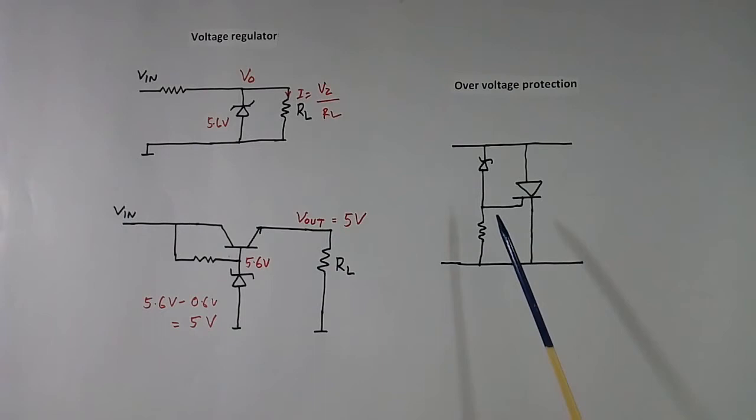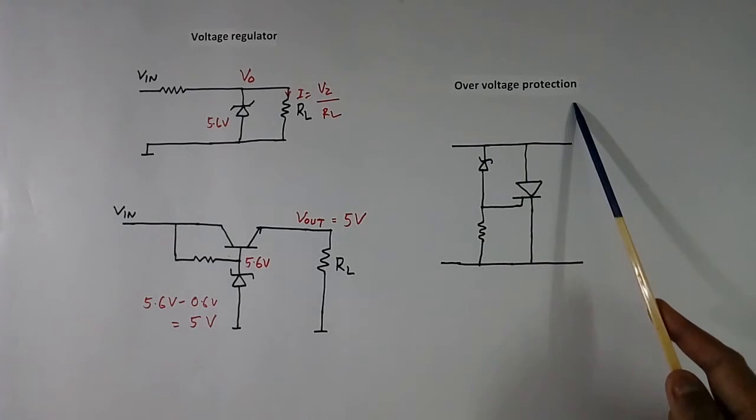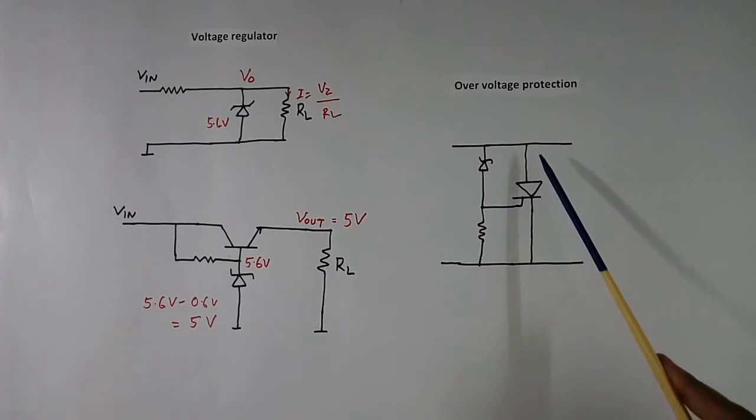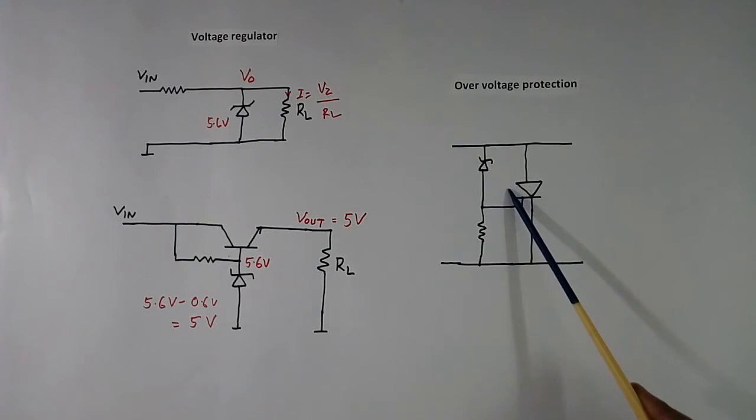Now this is another application of Zener diode in over voltage protection. This is thyristor. I have connected one Zener diode in gate. This resistor is connected to suppress noise. When voltage across this becomes equal or more than the Zener diode, the Zener diode will conduct and the gate current will flow like this. Because of this gate current, the thyristor will trigger and this will become short. It will not be fully short because there will be drop of thyristor, small drop. Now current will flow like this.